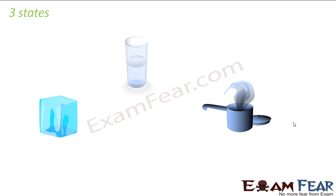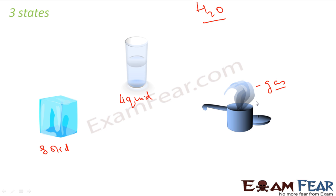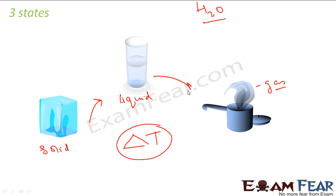So you see, there are three states of matter: solid, liquid, and gas. For example, H₂O in the form of ice is solid, in water it is liquid, and in the form of vapors it is gas. A matter can exist in three forms. The same matter exists in three forms and the only difference is temperature — you keep heating, solid becomes liquid; you keep heating, liquid becomes gas. So, based on the temperature and pressures, a matter can exist in various phases.